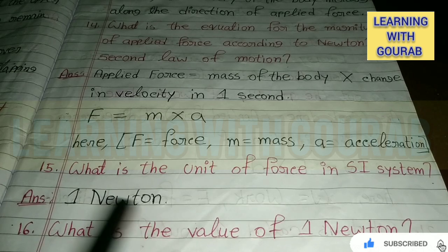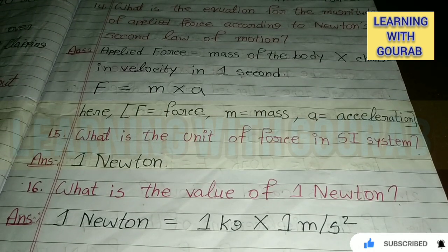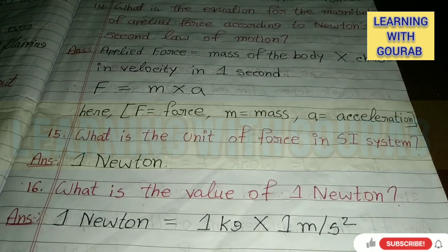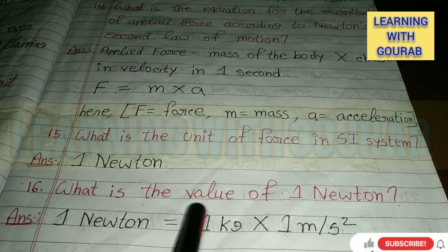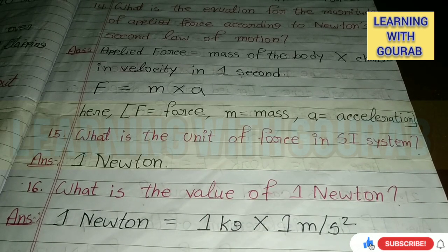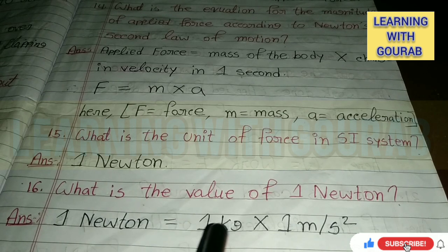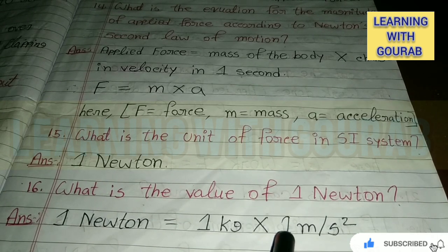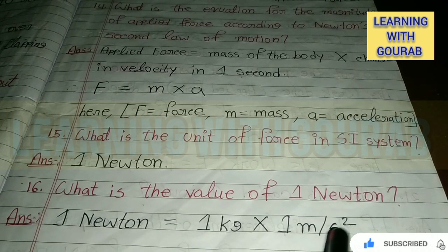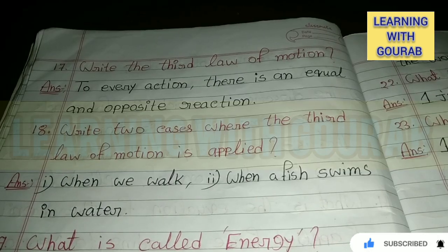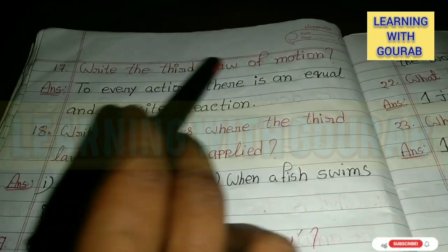Answer: 1 Newton. Next question: What is the value of one Newton? Answer: One Newton equals one kilogram multiplied by one meter per second squared. Next question: Write the third law of motion.